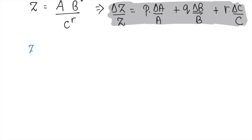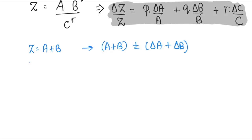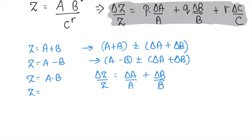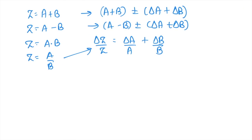For addition, if z = a + b, then z = (a+b) ± (δa + δb). When z = a − b, we get z = (a−b) ± (δa + δb). For multiplication or division z = a·b or a/b, the relative error δz/z = δa/a + δb/b. And when z = a^n, then δz/z = n·(δa/a).